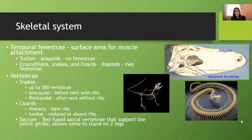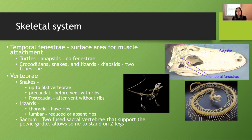Moving on to the skeletal system. Remember when we talked about reptile evolution — the diapsids, synapsids, and anapsids — that relates to the temporal fenestra. On an alligator skull, we see two temporal fenestra, meaning diapsid. Crocodiles, snakes, and lizards are diapsids, as are birds. Turtles are anapsids — no holes in that part of the skull. Mammals are synapsids, where there is one hole.